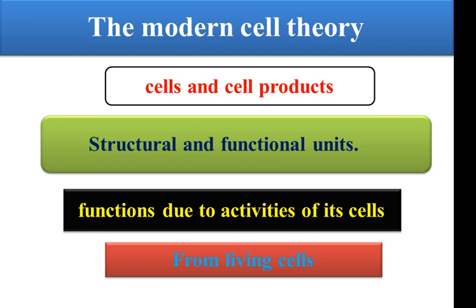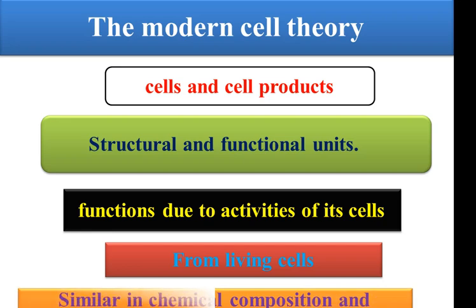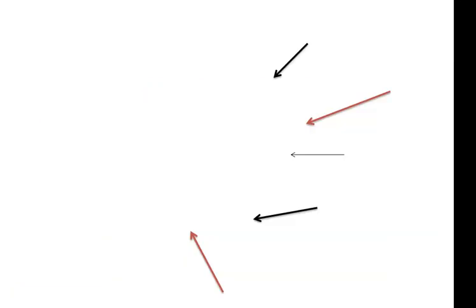Each cell has a precursor cell — that is, each living cell comes from a living cell — and all cells have similar composition and metabolic mechanisms. This is the modern cell theory.